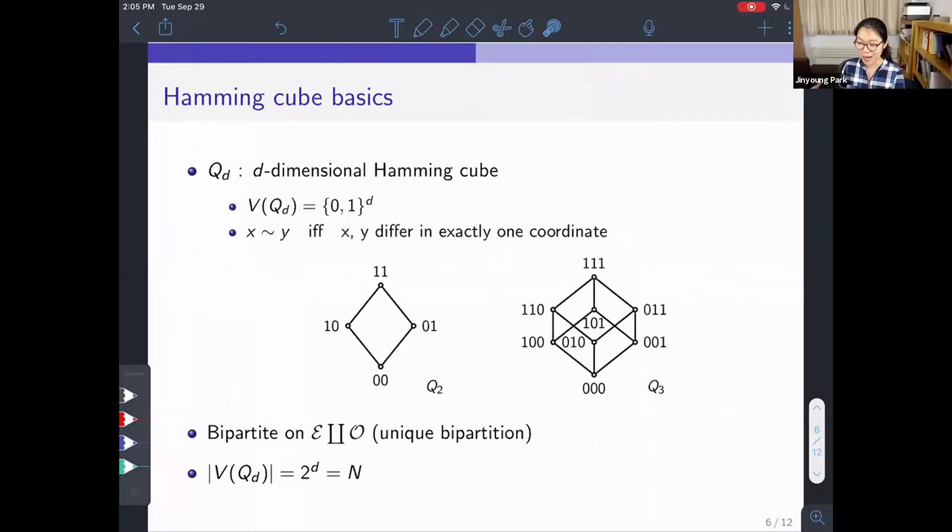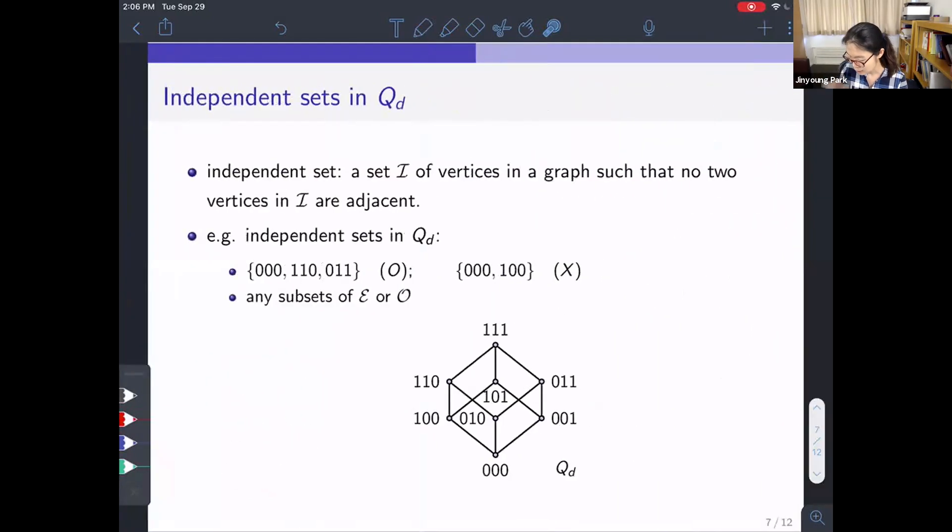May I continue? Yep. So we are now with the Hamming cube. It's easy to see that Q_d, the Hamming cube, is bipartite on E union O, where E is the set of even vertices, where an even vertex is a binary string with even number of ones in its coordinates. And O is the set of odd vertices. Another way of drawing this Hamming cube is this: we can put E here, this is the set of vertices, and O here. And all of the edges are lying between these parts. There are no edges inside E or O. And finally, the number of vertices of Q_d is 2^d, and we will use big N for this quantity. In this talk, big N always means the number of vertices in the Hamming cube.